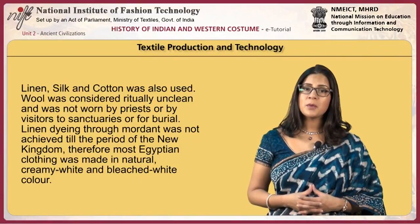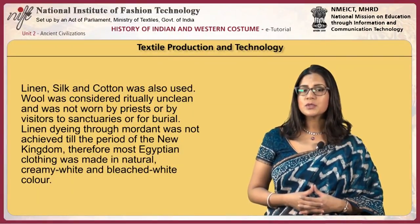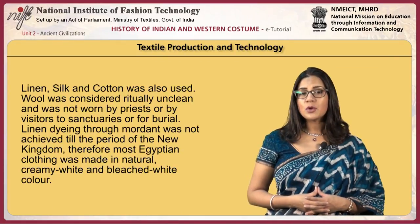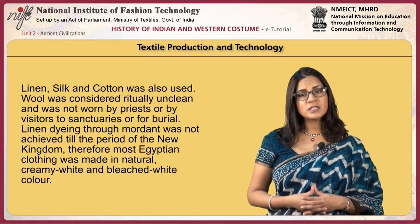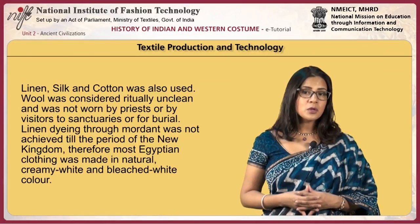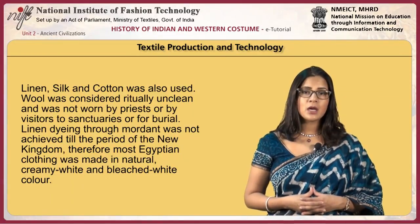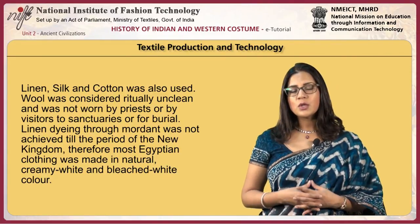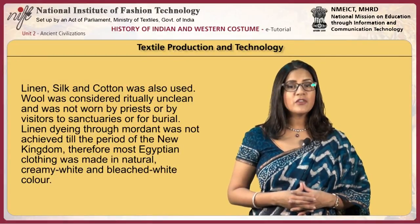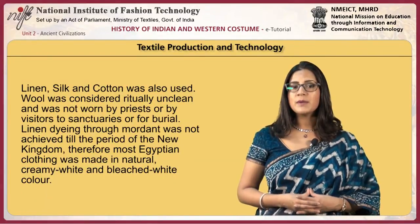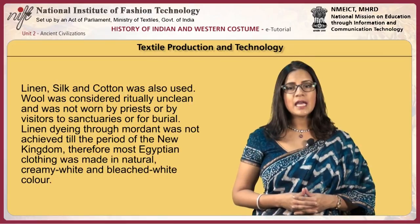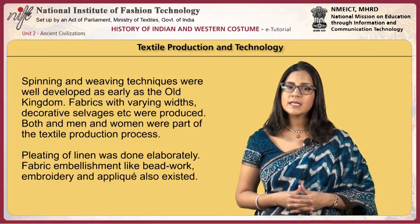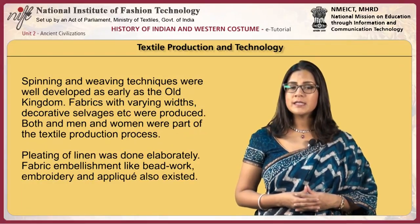Linen was used predominantly; silk and cotton were also used. Wool was considered ritually unclean and was not worn by priests or by visitors to sanctuaries or for burial, though it was used as an outer garment. Linen dyeing through mordant was not achieved until the period of the New Kingdom; therefore most Egyptian clothing was made in natural creamy white and bleached white color.